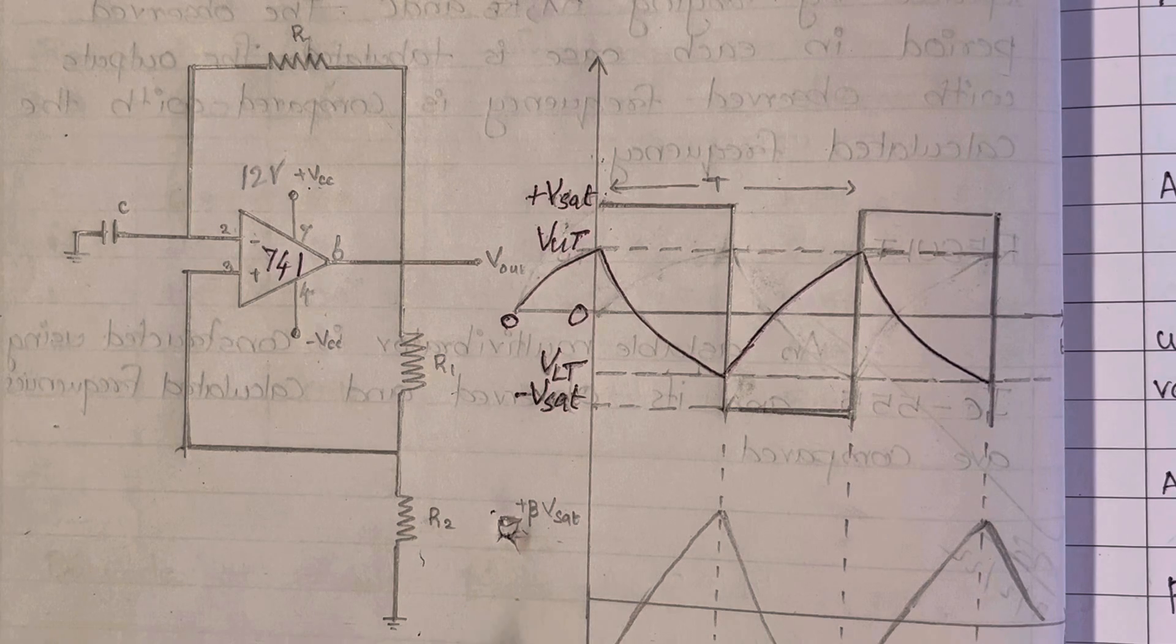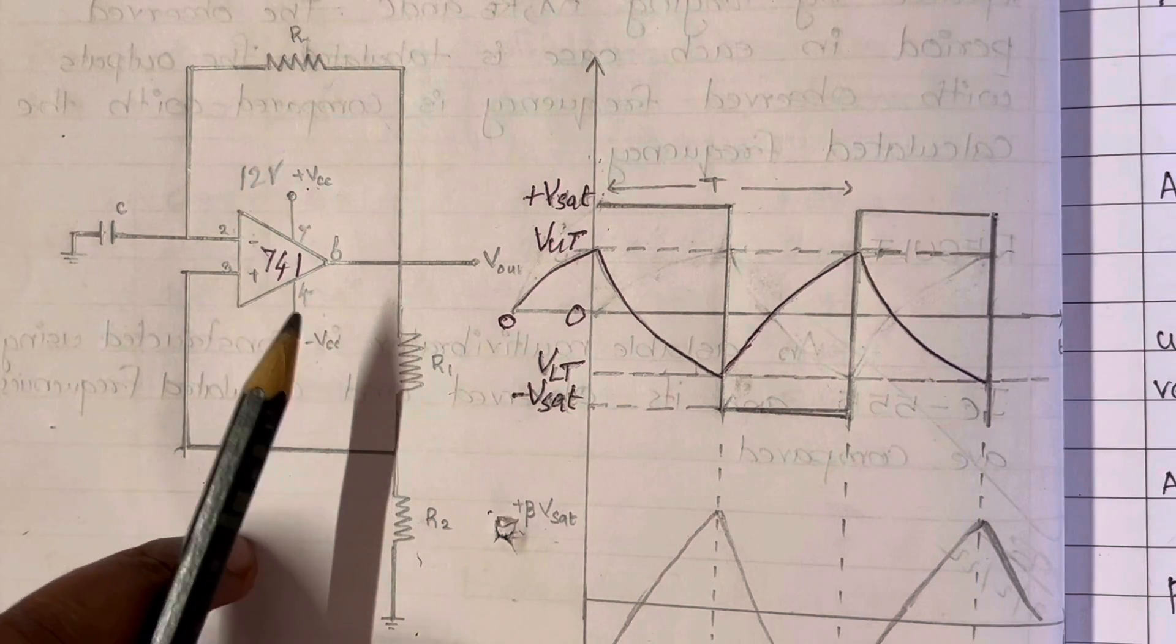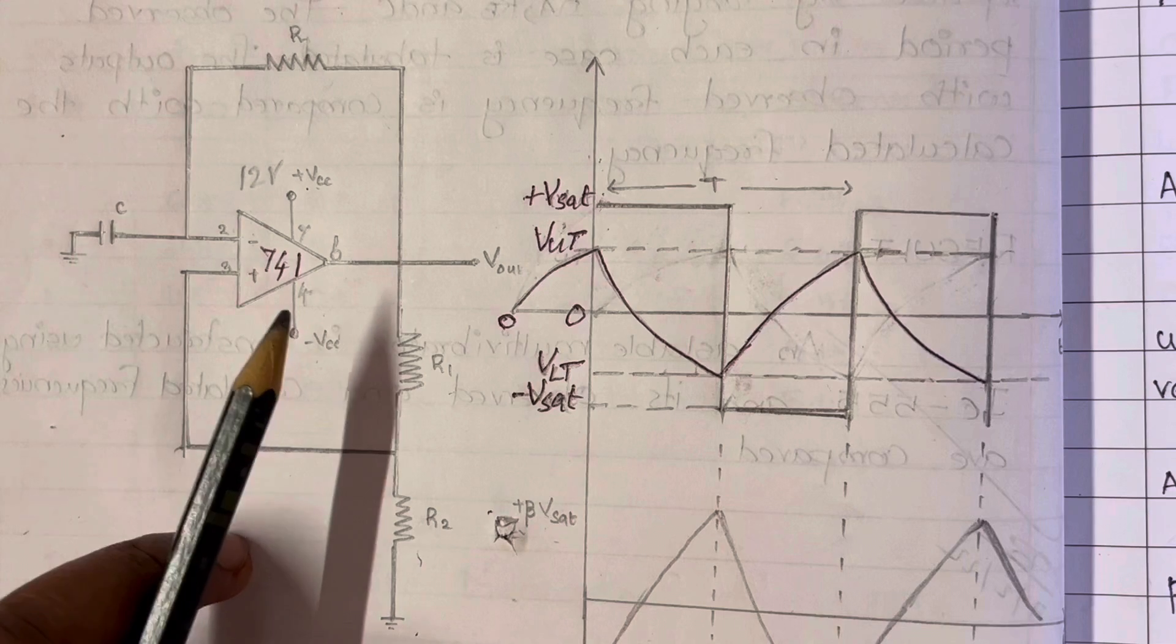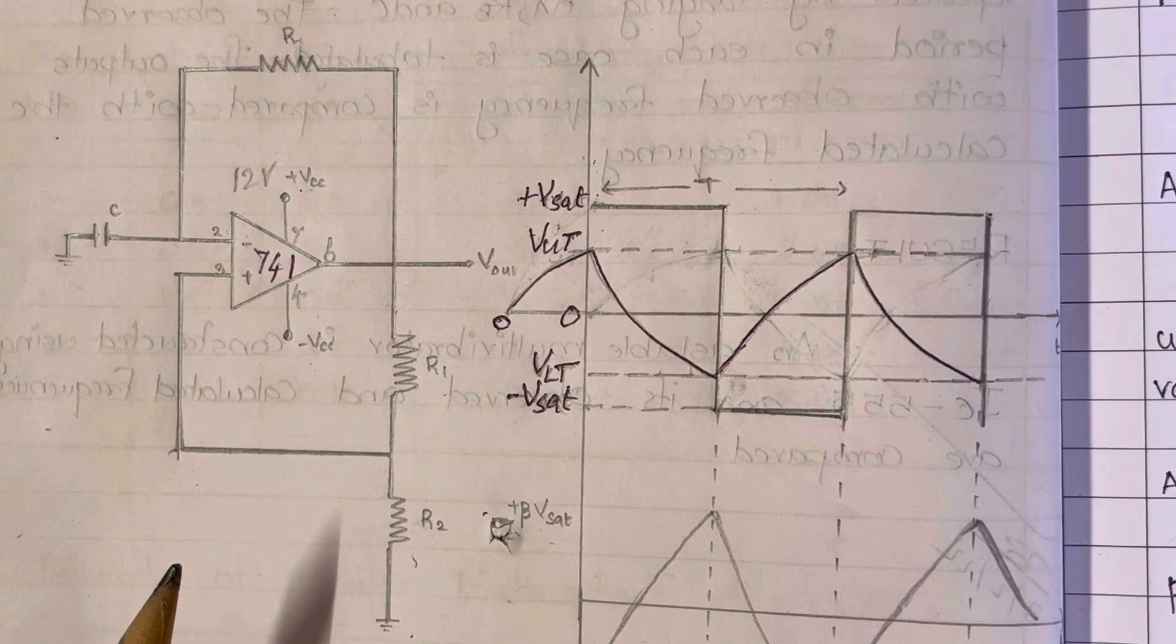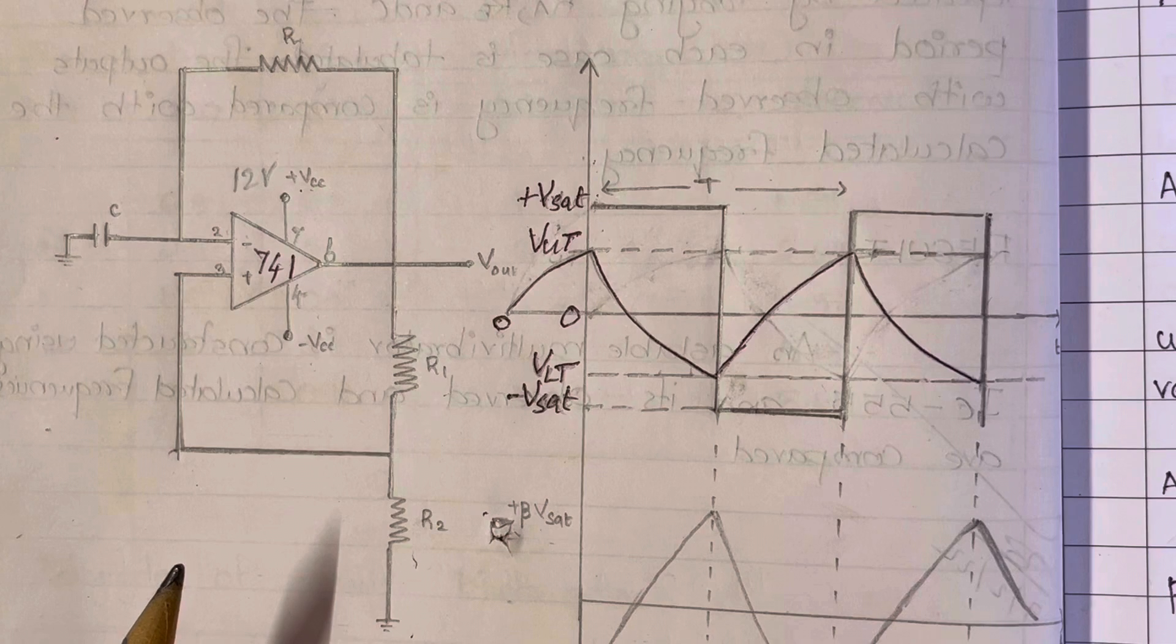Here the IC we use is IC741, the op-amp IC 741, and we have done earlier many of the IC-based op-amp based circuits.